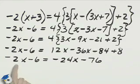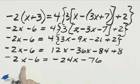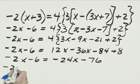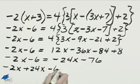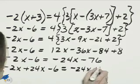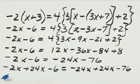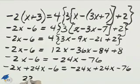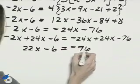Now we can pull the negative 24x to the left hand side by adding it. Negative 2x plus 24x minus 6 equals, and be sure to add 24x on the right as well. What you do to one side of an equation you must do to the other. On the left is 22x minus 6 equals negative 76 on the right.